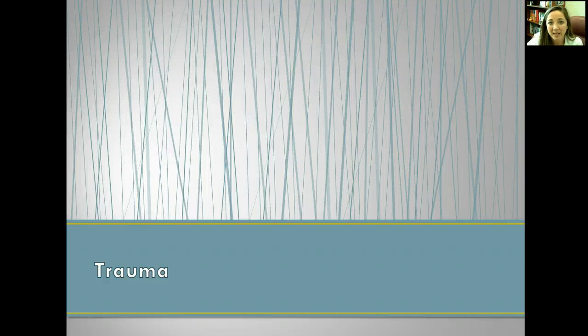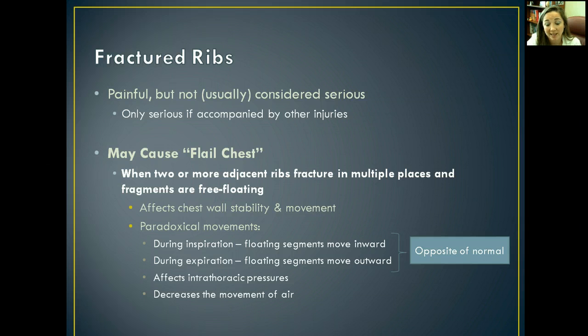We're going to talk about some problems that can happen in your respiratory structures as a result of trauma. So, fractured ribs — you can get fractured ribs from a lot of different ways, places, accidents, or intentional harm as well.